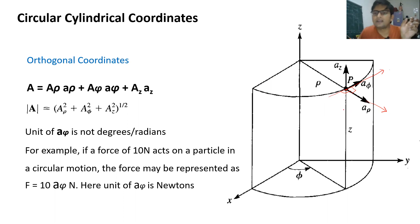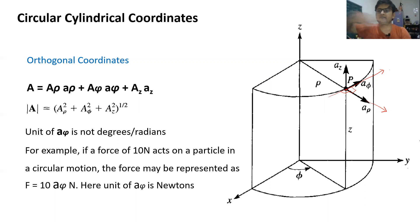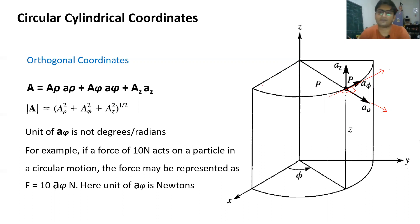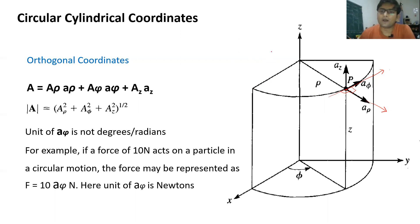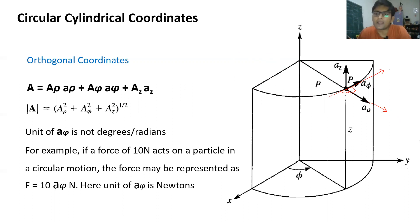I'm calling it a circular cylindrical coordinate system because the cylinder is circular in nature. If you cut the cylinder and view it from above, you see a perfect circle. In this diagram we are seeing just part of that circle; completing it gives the full cylinder. The first unit vector, in the direction of rho, goes radially outward from this circle.